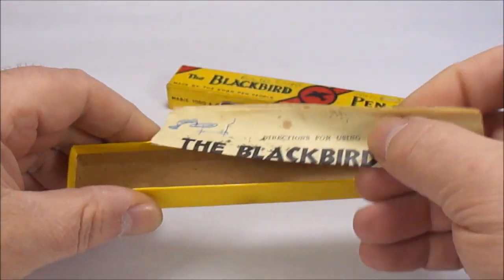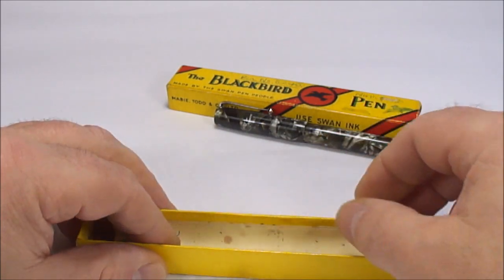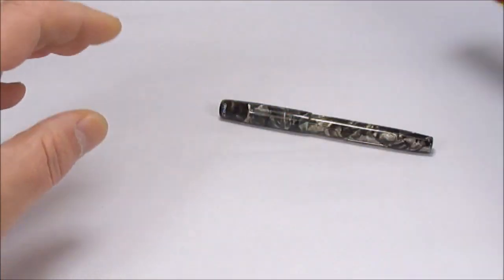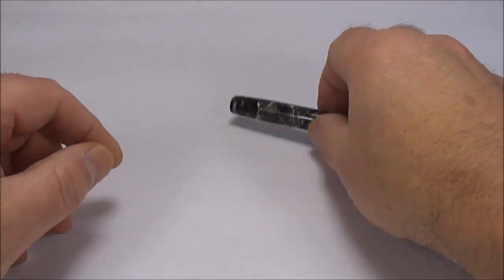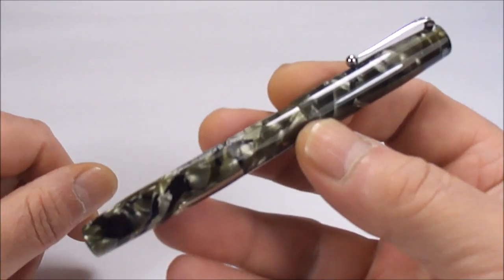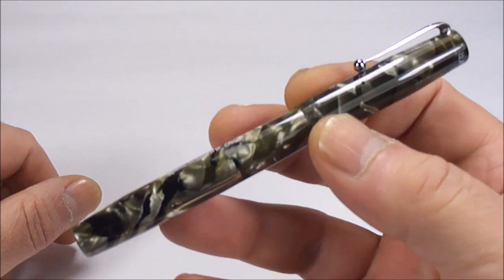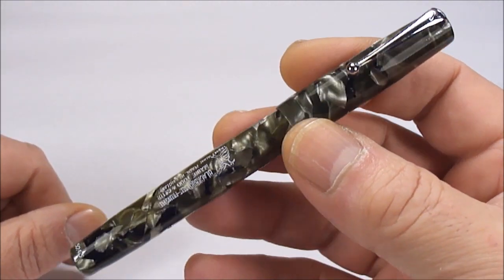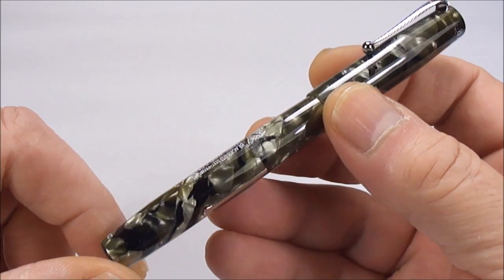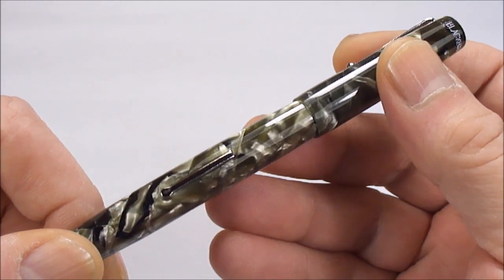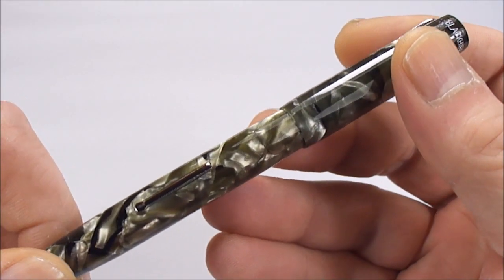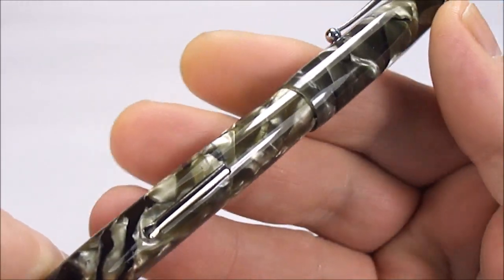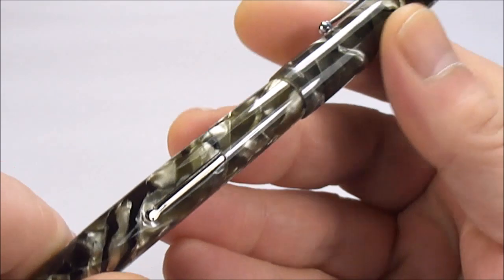As I said, the pen comes with the original instructions. So let's take the box and pop that to one side. Let's have a look at the pen. Here we have it, an absolutely gorgeous Blackbird Fountain Pen. Now it comes in this beautiful sort of green, I'd say green and grey marbling color.